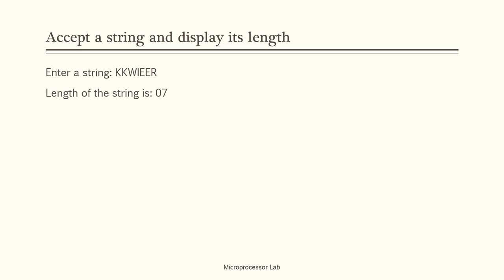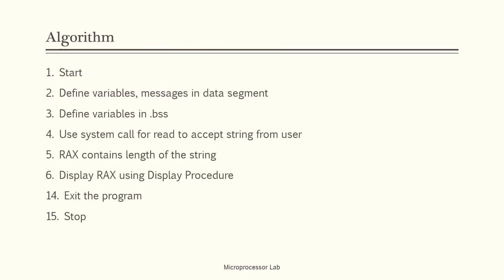Let us see what we are going to do in today's lab assignment. The input will be a string entered by the user — for example, 'kkwitem'. The output is the length of the string, which in this case would be 7. The algorithm is: start, define messages in the data segment, define required variables in .bss, use the system call for read to accept the string from the user. Whenever we use the system call to accept a string, the length of the string is automatically stored in the RAX register. We then display the contents of RAX using our display procedure, and exit the program.